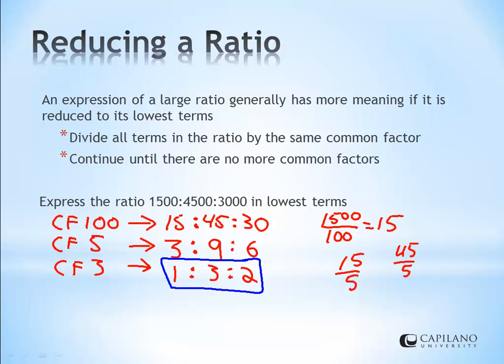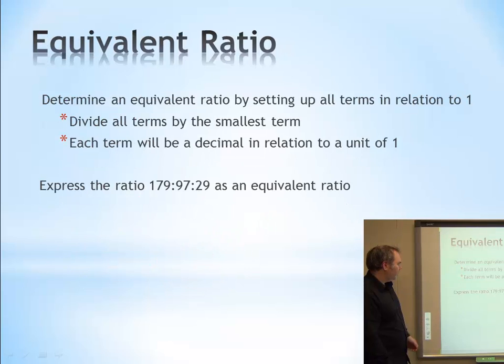So 1,500 to 4,500 to 3,000 in lowest terms would be 1 to 3 to 2. Much easier value to see how big they are compared to big ugly numbers. And if these weren't actually even level 100 values, multiples of 100, then it might be even more difficult to kind of look at the relative values of it. So lowest terms continue to find a common factor until there are no other common factors. We're going to divide each term by that common factor each time.